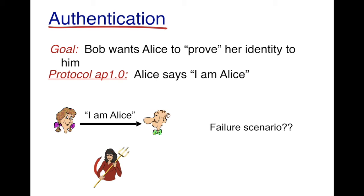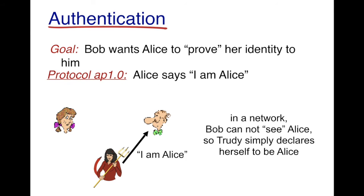There is Trudy who can listen to the channel and communication between Alice and Bob. What could Trudy do? Trudy could just impersonate Alice and send the message to Bob saying 'I am Alice.' As Bob cannot physically see Trudy, there is no way for Bob to know this message came from Trudy and not from Alice. So this protocol has a bunch of flaws.